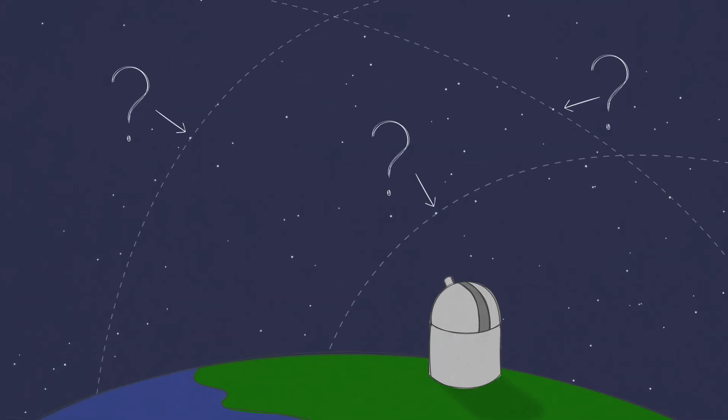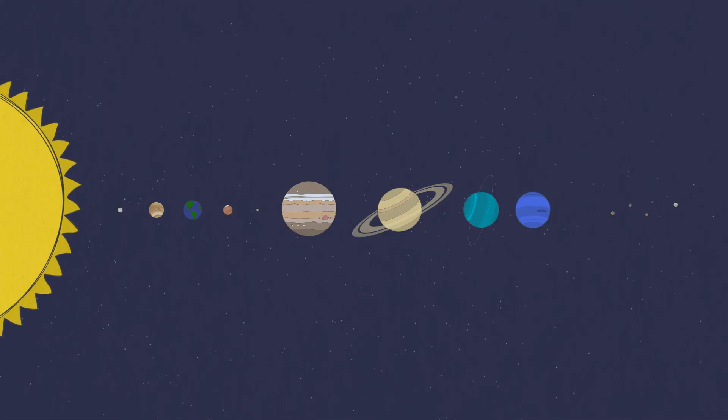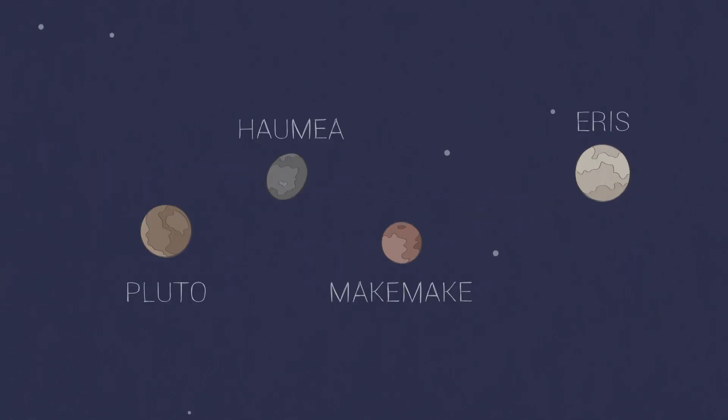There may be dozens of dwarf planets in our solar system. So far, we've classified just a handful, most of them very far away.